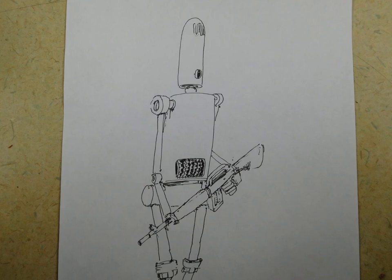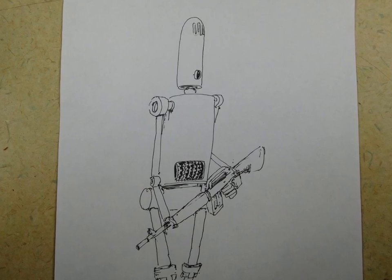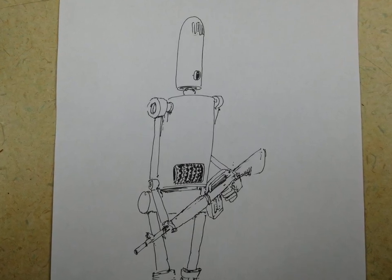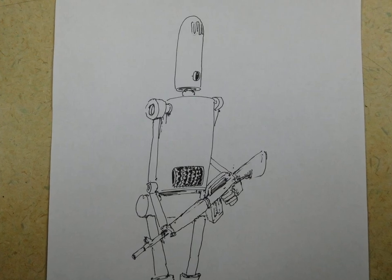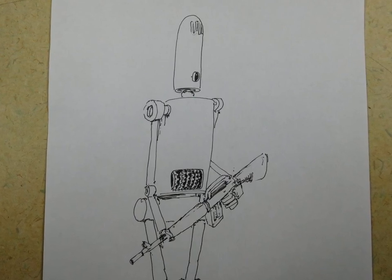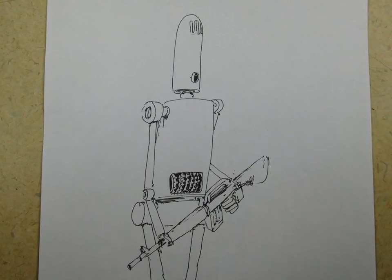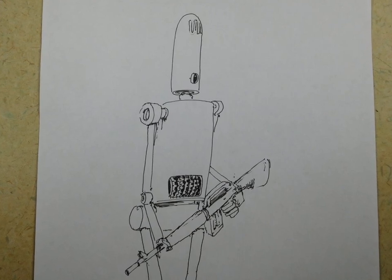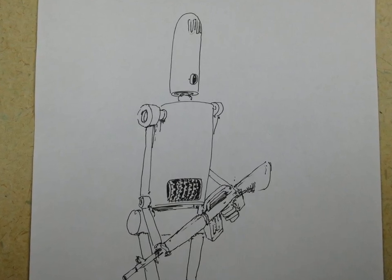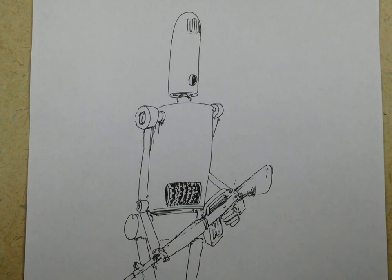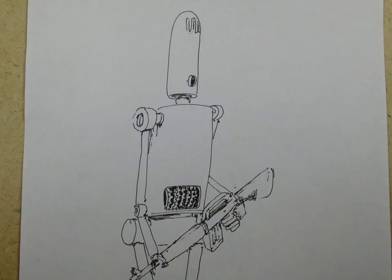So I've gone ahead and I've drawn another picture of one of my robots. And I'm going to shade this using stippling. Usually I'd use hatching, but this time I'm going to do stippling to create a more subtle effect.